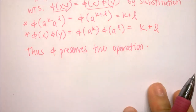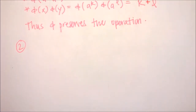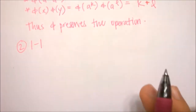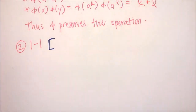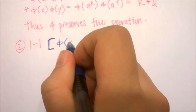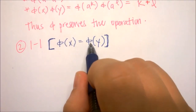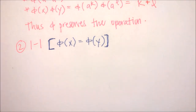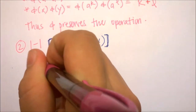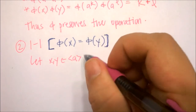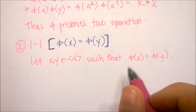At this point we know phi is a homomorphism, but we want to go further and show it's an isomorphism, so we need to prove two more things: that it's one-to-one and onto. To show something is one-to-one, we prove: if phi of x equals phi of y, then x equals y. So let x and y be elements of the cyclic group generated by A such that phi of x equals phi of y.